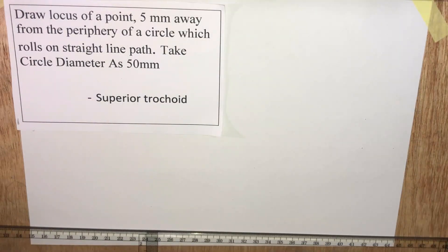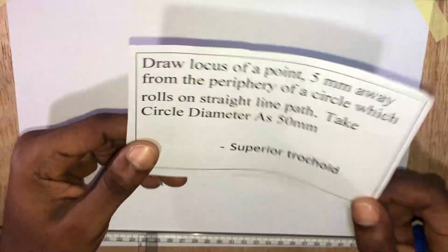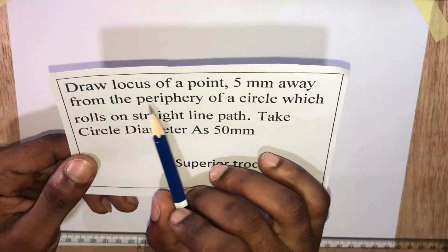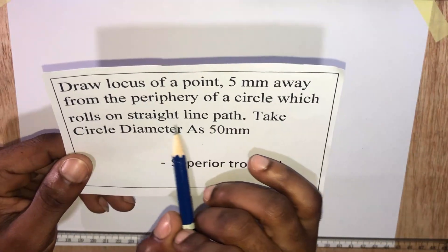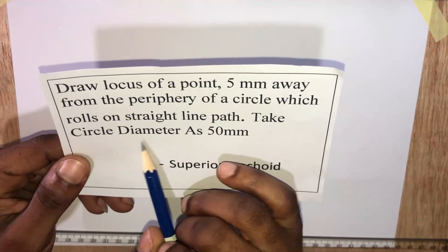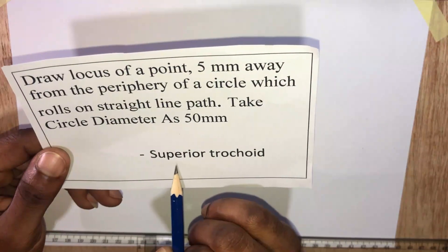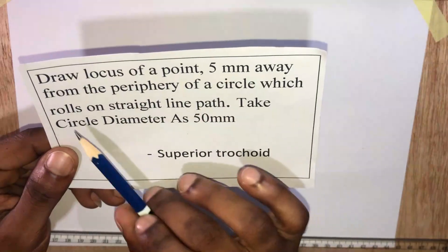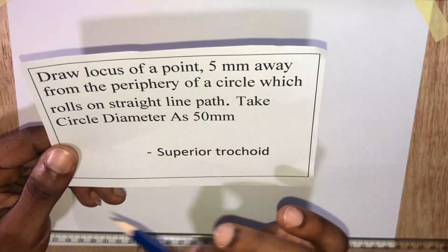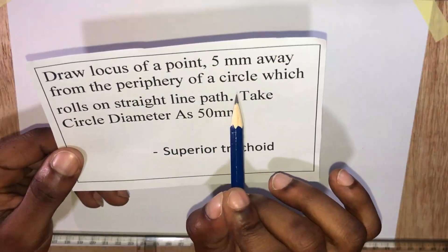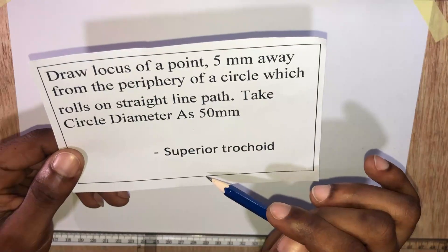Let's look at how to draw a superior trochoid. Our problem statement says we should draw the locus of a point 5mm away from the periphery of a circle which rolls on a straight line path. Take the circle diameter as 15mm. The point is located outside the rolling circle, and that makes it a superior trochoid.